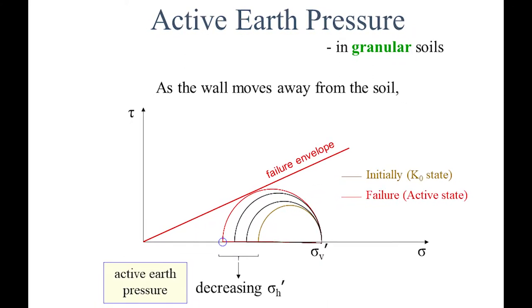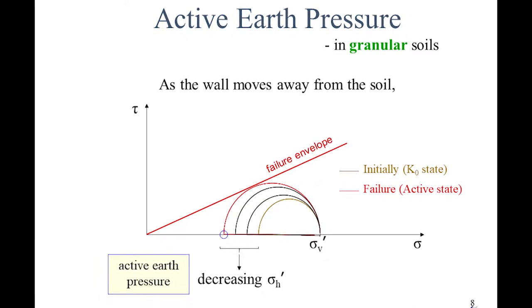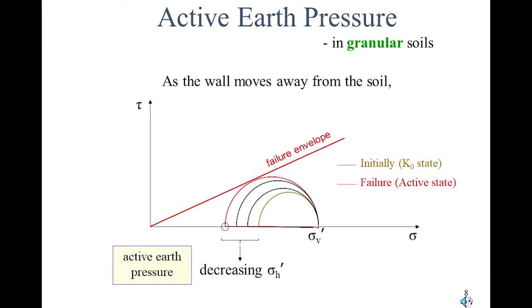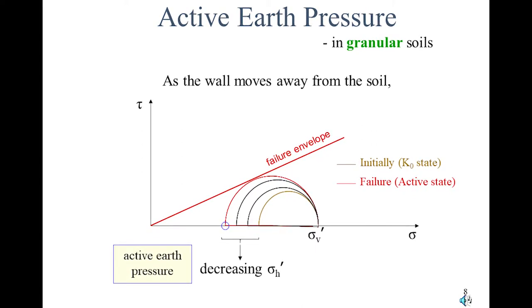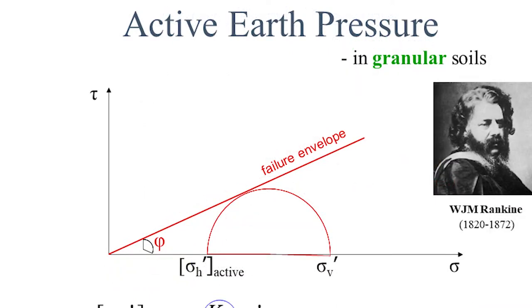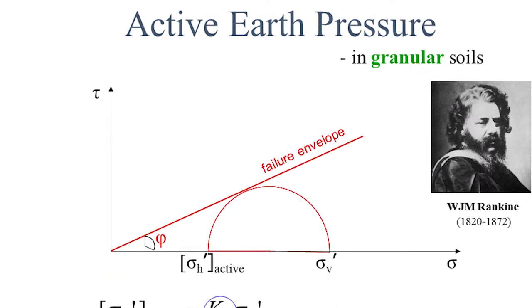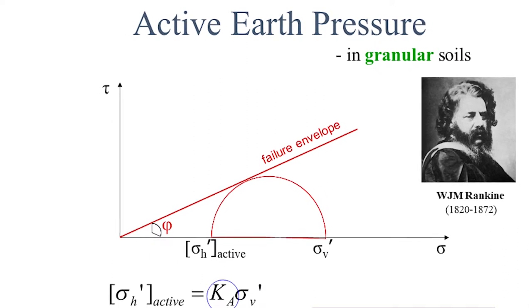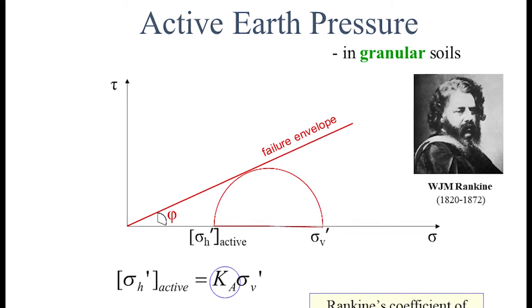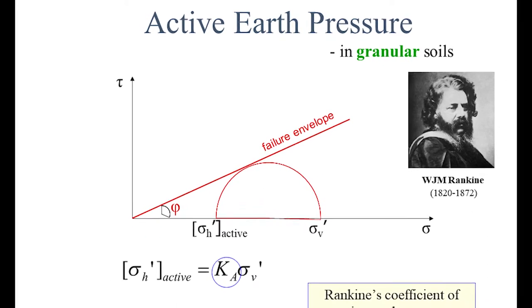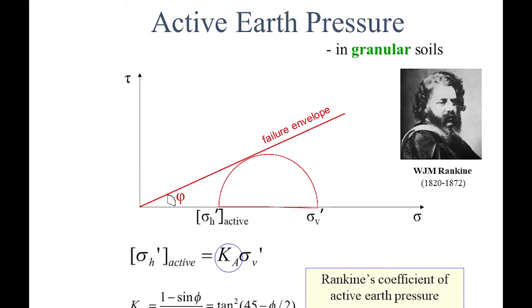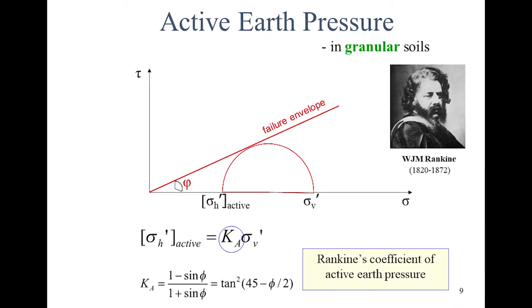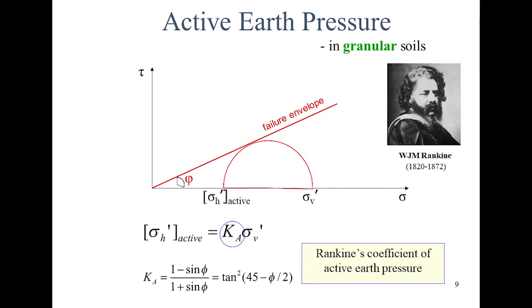If the failure envelope is drawn, the Mohr circle touches the failure envelope. Once it touches the failure envelope, the active earth pressure state is reached and failure takes place. The active earth pressure sigma H dash (active) equals Ka times sigma V dash, where Ka equals (1 minus sin phi) divided by (1 plus sin phi), which equals tan squared (45 minus phi/2). This is Rankine's coefficient of active earth pressure.